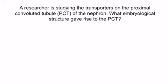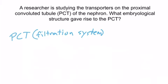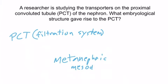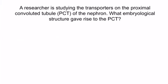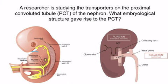Now let's do a quick question to apply what you've learned. A researcher is studying the transporters on the proximal convoluted tubule of the nephron. What embryological structure gave rise to the proximal convoluted tubule? The PCT is part of the filtration system because it's part of the nephron. The structure that gave rise to the filtration system is the metanephric mesoderm. You can see that clearly here — the metanephric mesoderm eventually becomes the filtration system, and part of the nephron is the PCT. And that concludes this section.